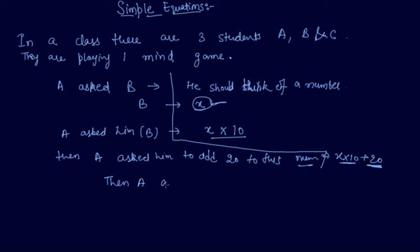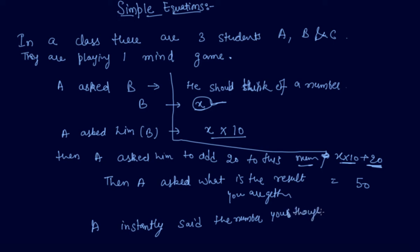Then A asked, what is the result you are getting? So on answer to this, B said I am getting let's say 50. So B said he is getting the number as 50 after doing all the equations like multiplying and addition. So A instantly said the number you thought was 3.